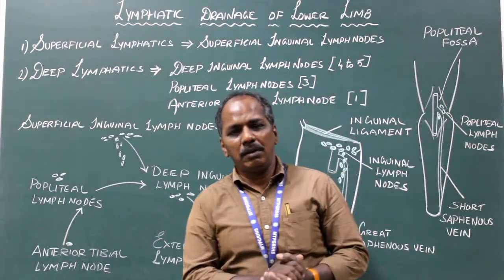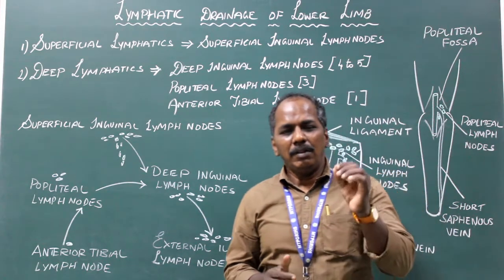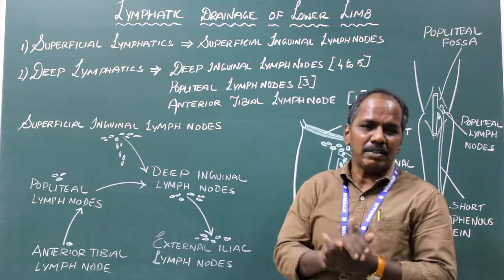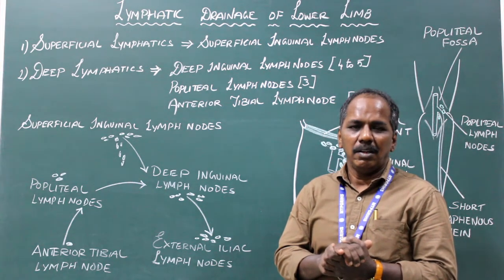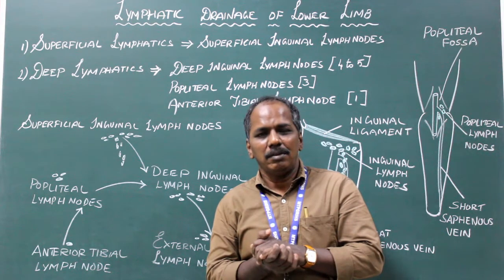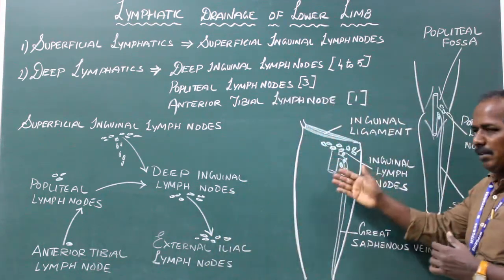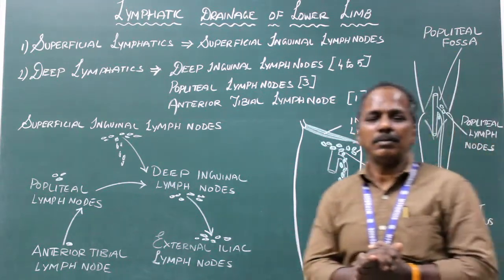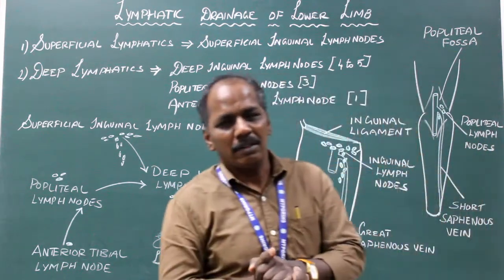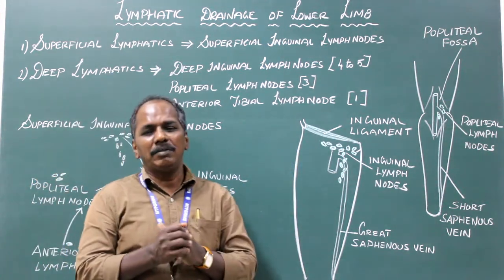Lymphatic drainage of the lower limb. Lymph from the lower limb is drained by the afferent vessels which drain into the lymph nodes present in various parts of the lower limb. Most of the lymph from the lower limb drains into the inguinal lymph nodes.